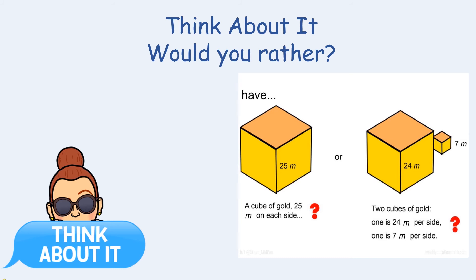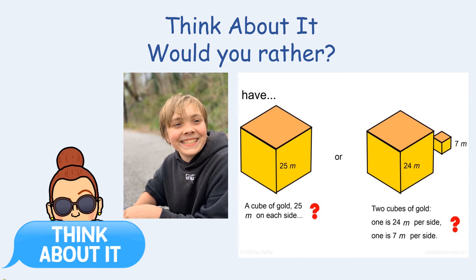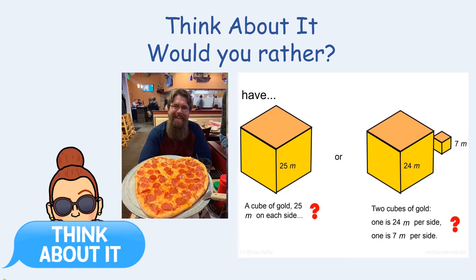Now we're going to start thinking about volume. Look at the image on your screen — which would you rather have: a cube of gold with 25 meters on each side, or two cubes of gold where one is 24 meters and the other is 7 meters? My husband Scott said he'd rather have the single 25-meter cube because it looks larger, and obviously you'd rather have more gold.